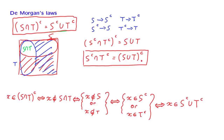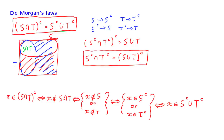Finally, it turns out that De Morgan's laws are valid when we take unions or intersections of more than two sets. There is a more general form: if we have a collection of sets S_n, perhaps an infinite collection, we take the intersection of those sets and then the complement — what that gives is the union of the complements. Similarly, if we have the union of certain sets and we take the complement of the union, what we obtain is the intersection of the complements.